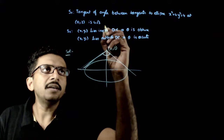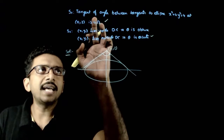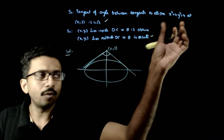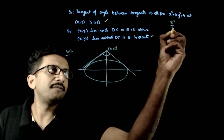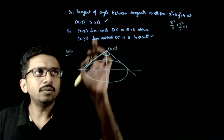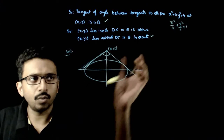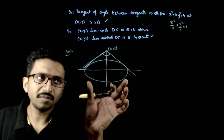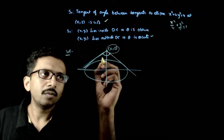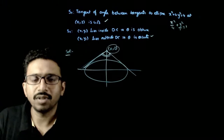Welcome students. You have been given two statements. Statement 1 is: the tangent of the angle between the tangents to the ellipse x²/4 + y²/1 = 1 at (0, 2) is 4√3. That is the first statement.